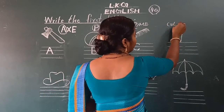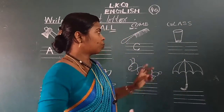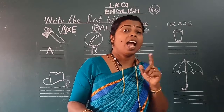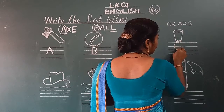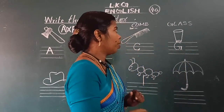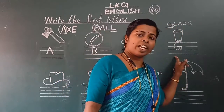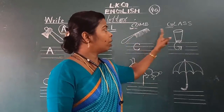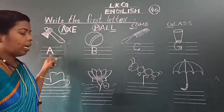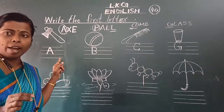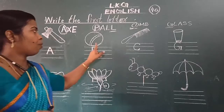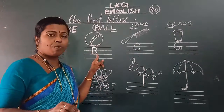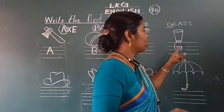What is this? Glass. Okay? Spell the word glass: G-L-A-S-S. You have to say along with me: A for axe, B for ball, C for comb, G for glass. Once again: A for axe, B for ball, C for comb, G for glass.